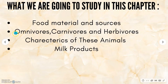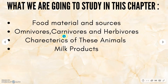Now I am going to talk about omnivores, carnivores, and herbivores. Omnivores are the animals which can eat both plants and animals, which means they are a combination of carnivores and herbivores. You will understand omnivores more when I talk about carnivores and herbivores.